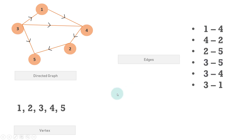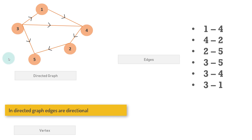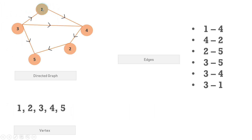These are all the edges present in this particular directed graph. In a directed graph the edge is pointing in a particular direction. In an undirected graph, if two nodes 1 and 4 are connected, there is an edge from 1 to 4 and also from 4 to 1. But in a directed graph there is a single edge — from 1 to 4 only. So we've seen what a directed graph is; now we'll learn what an adjacency matrix is.